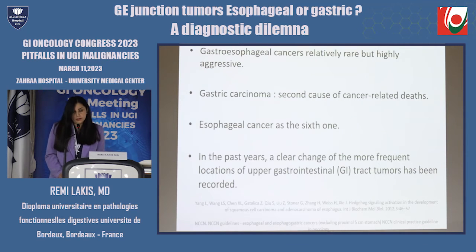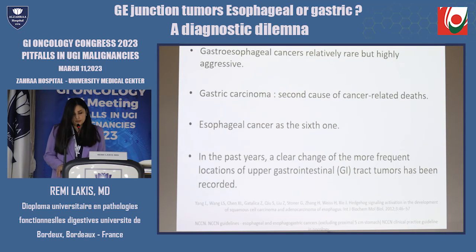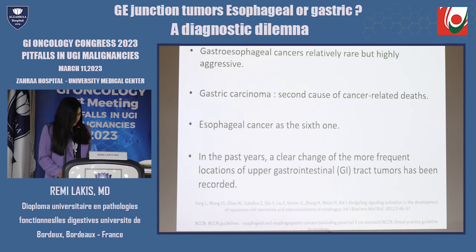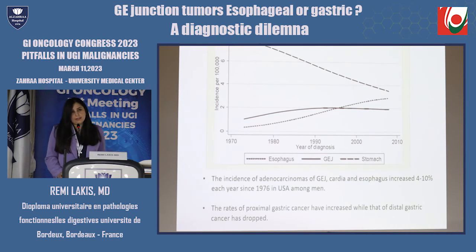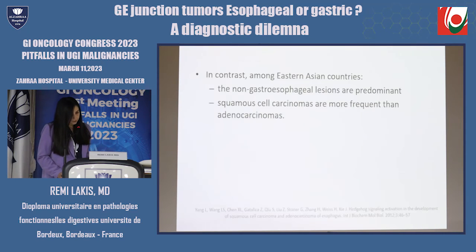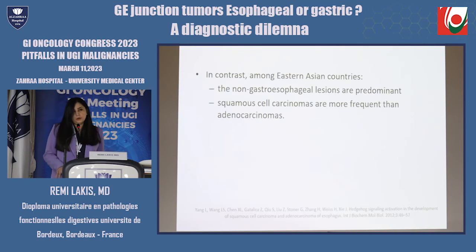As for the epidemiology, these are rare but highly aggressive cancers. Gastric carcinoma is the second cause of cancer-related death and esophageal cancer the sixth. Most importantly, we should discuss the changing location of upper GI tumors over the last 50 years. In the USA, non-cardia gastric cancers are decreasing, esophageal adenocarcinomas are increasing, and this leads to an increase in GA junction tumors. This applies also to Western countries, in contrast to Asian countries where squamous cell carcinomas are still more frequent.